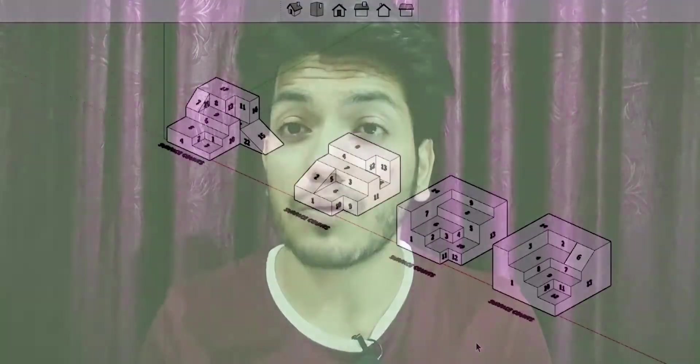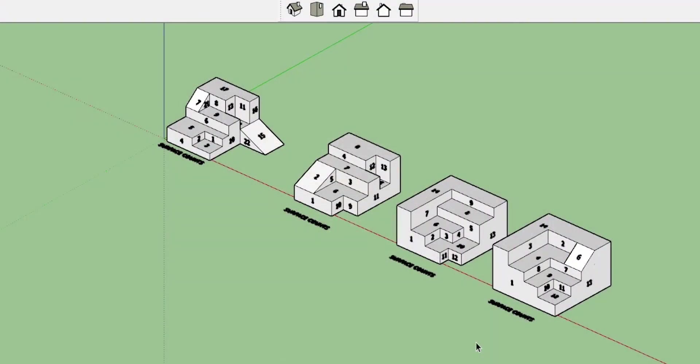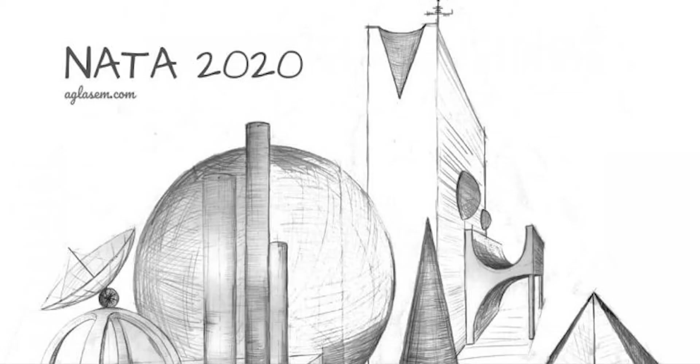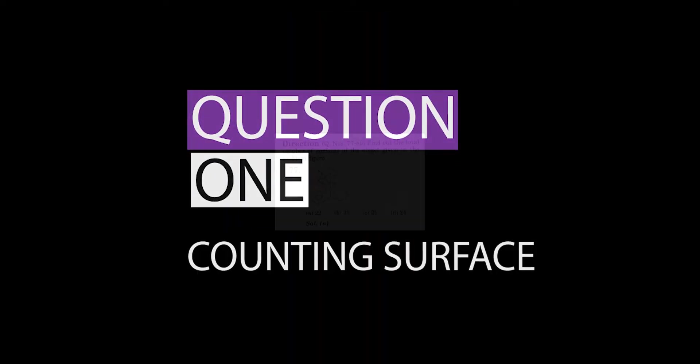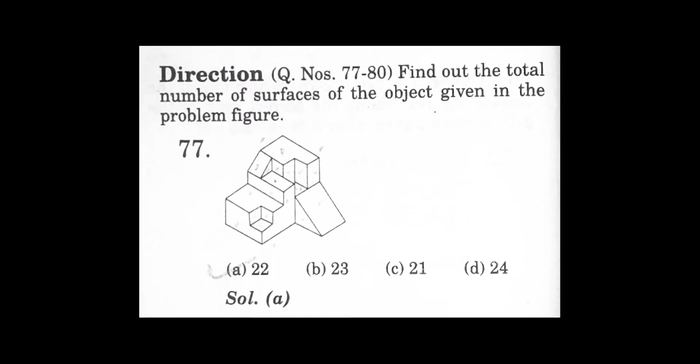Welcome, you are watching Atmosphere. In this video I will be discussing the question of surface counting that is asked in NATA and IIT Mains Paper 2. This is the first question that we are going to solve. There are four options given and we have to find the correct total number of surfaces present in the solid model.